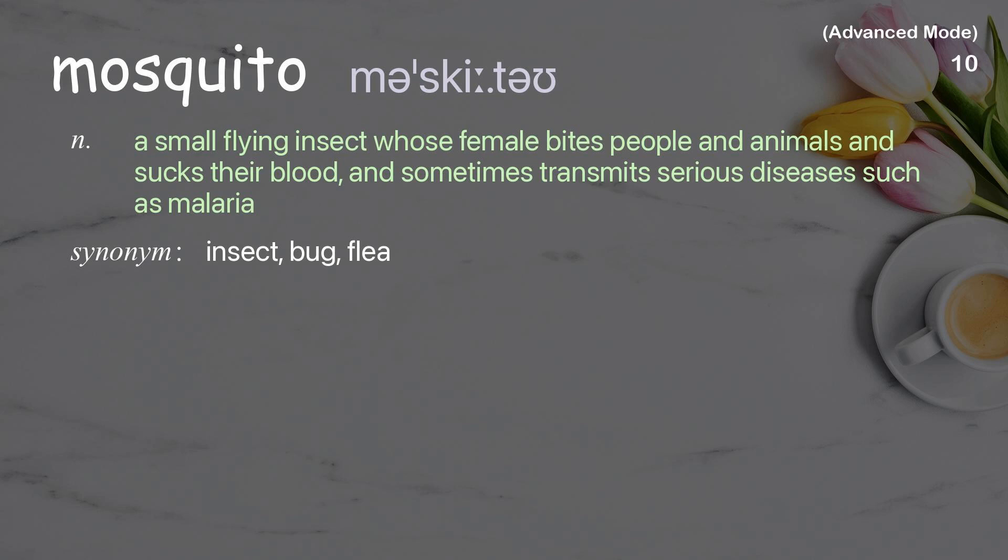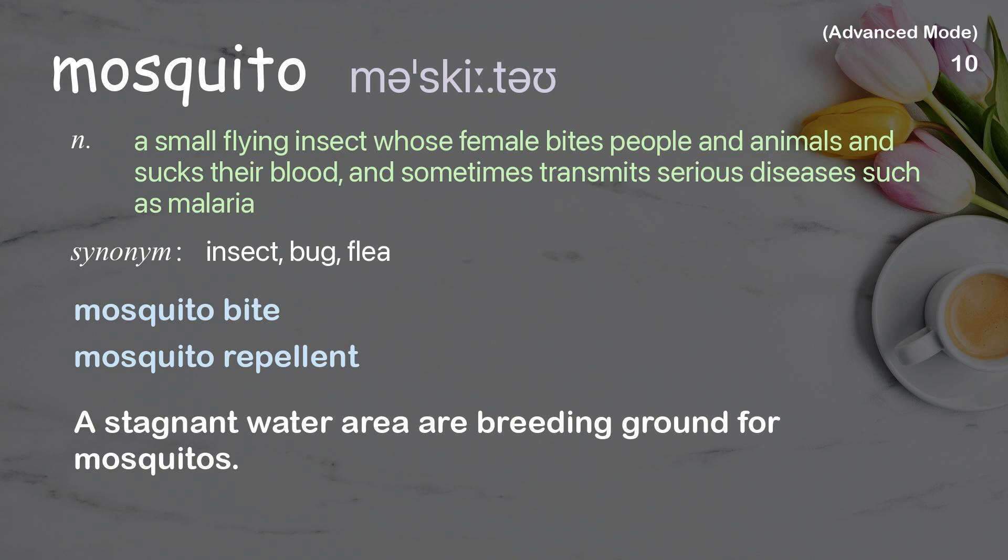Mosquito: a small flying insect whose female bites people and animals, sucks their blood, and sometimes transmits serious diseases such as malaria. Example: A stagnant water area is a breeding ground for mosquitoes.